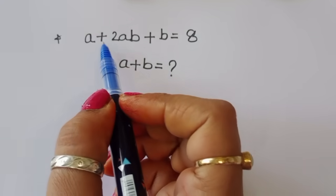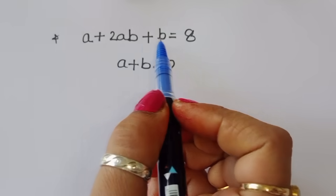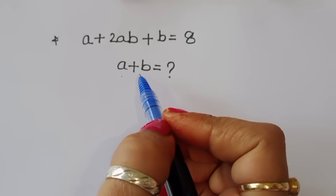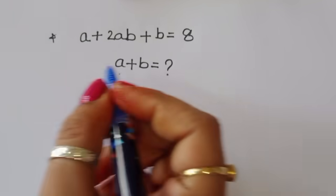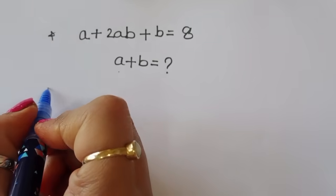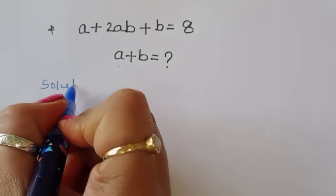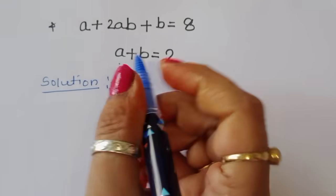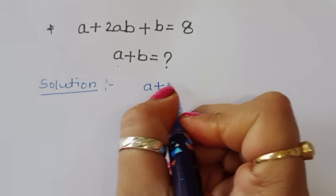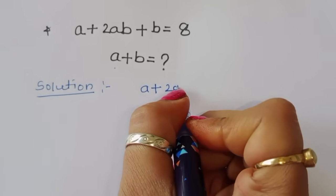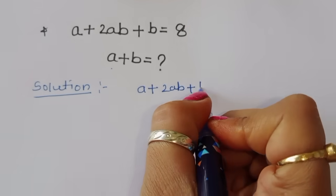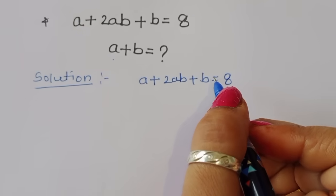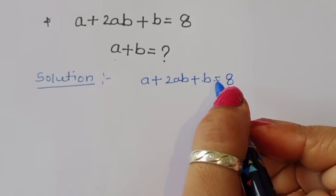The question is: given a + 2ab + b = 8, we have to find out the value of a + b. Let's see the solution.